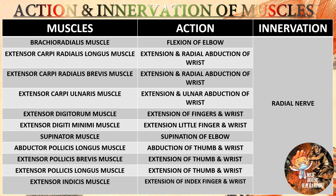Brachioradialis action is flexion of elbow, innervated by the radial nerve. Extensor carpi radialis longus action is extension and radial abduction of wrist, innervated by the radial nerve. Extensor carpi radialis brevis action is extension and radial abduction of wrist, innervated by the radial nerve. Extensor carpi ulnaris action is extension and ulnar abduction of wrist, innervated by the radial nerve. Extensor digitorum action is extension of fingers and wrist, innervated by the radial nerve. Extensor digiti minimi action is extension of little finger and wrist.